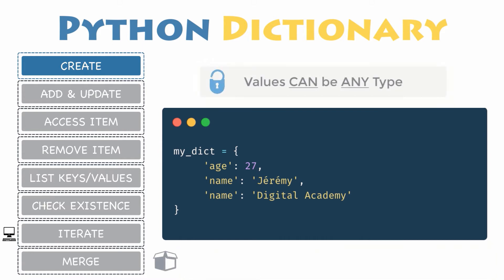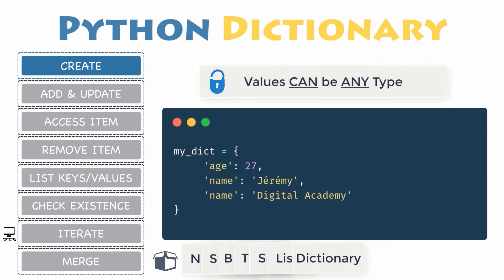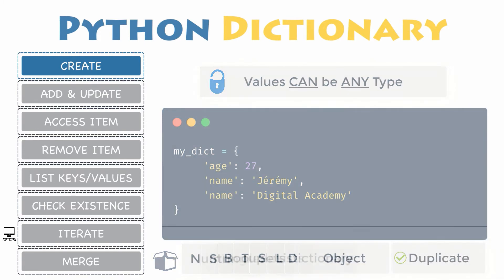Values can be of any type. There are no restrictions on dictionary values — a dictionary value can be any type of object and can even appear in a dictionary multiple times.